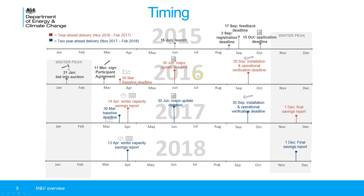You'll then get on with installing your project and will need to provide installation and operational verification evidence by the 30th of September. Your project will then be installed and ready to deliver savings over the winter peak 2016-17. You'll then need to provide a winter capacity savings report — effectively a report of the savings achieved over the winter peak period — followed by a final savings report in early December. There is also a series of blue deadlines on the slide: in the pilot you can elect to go for two-year-ahead delivery, in which case all the deadlines shift ahead by a year and you would deliver savings over the 2017-18 period.